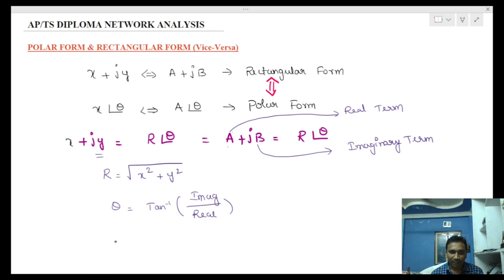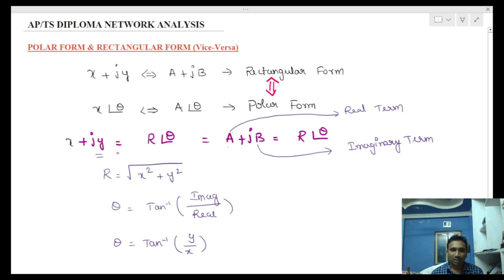So theta equals tan inverse of imaginary by real — that is, y by x. These are the main formulas. We have the R value and the theta value. The result is represented as R at an angle theta, where R is the magnitude and theta is the angle.